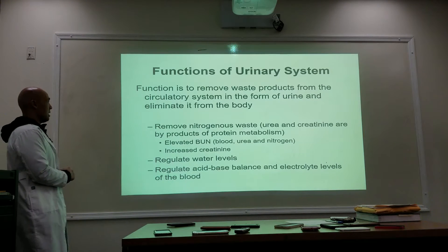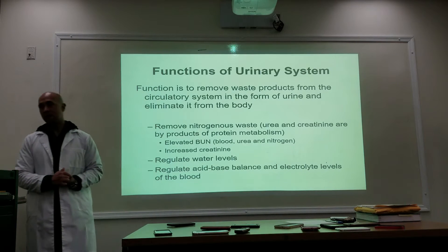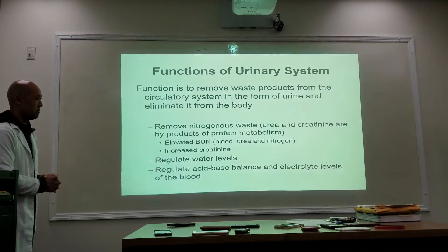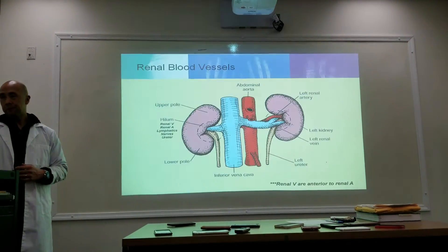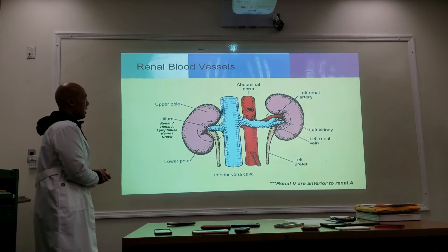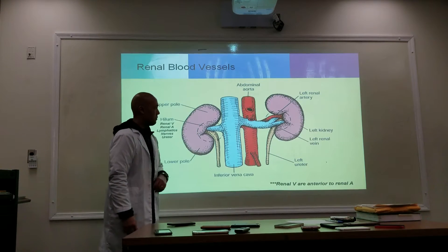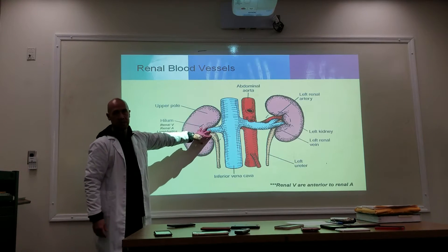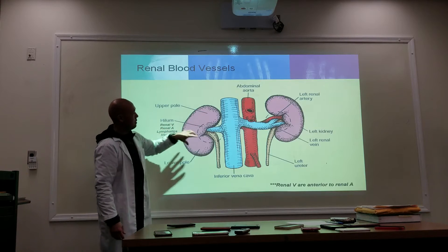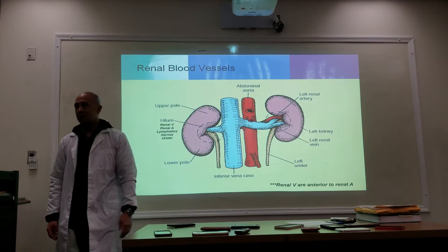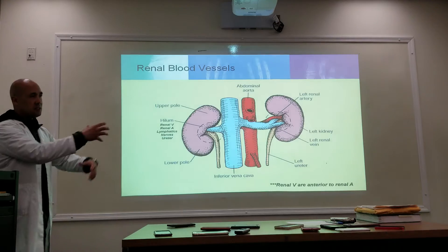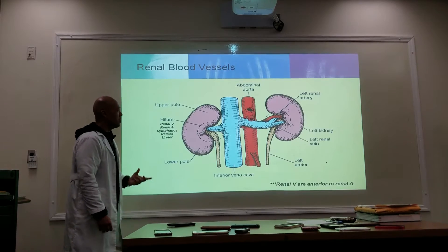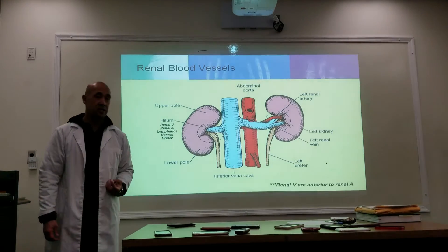The urinary system also regulates water levels and regulates acid-base balance and electrolyte levels of the blood. The kidney has an upper pole and a lower pole, separated by the hilar region — the hilum. This is where you have your renal vein, renal artery, lymphatics, nerves, and the ureter coming out of the hilar area.